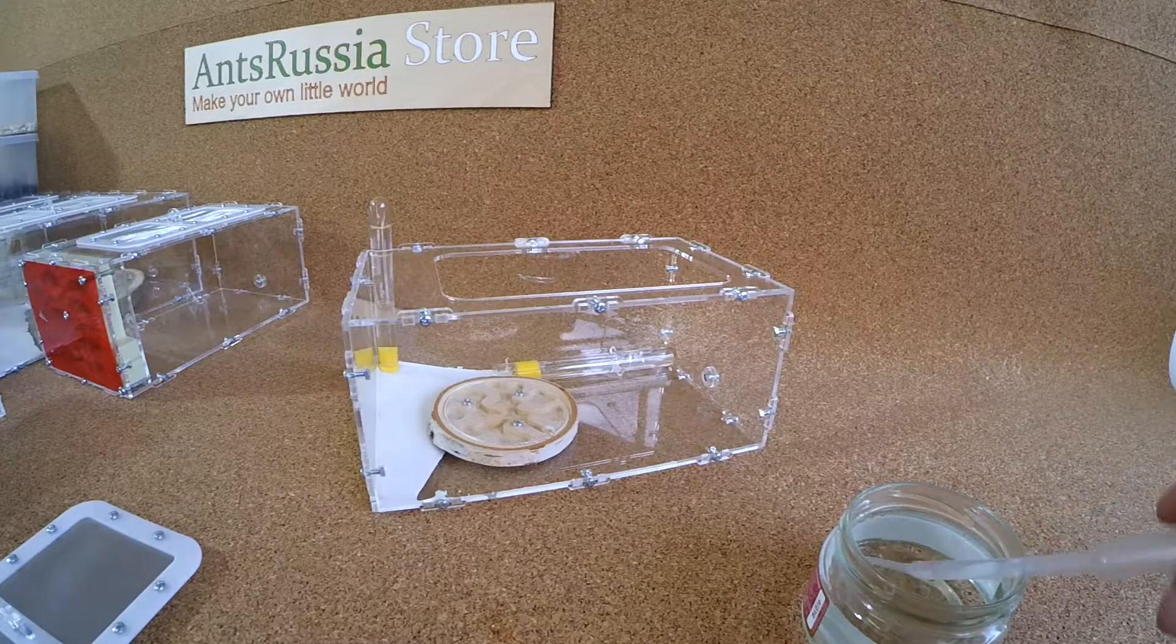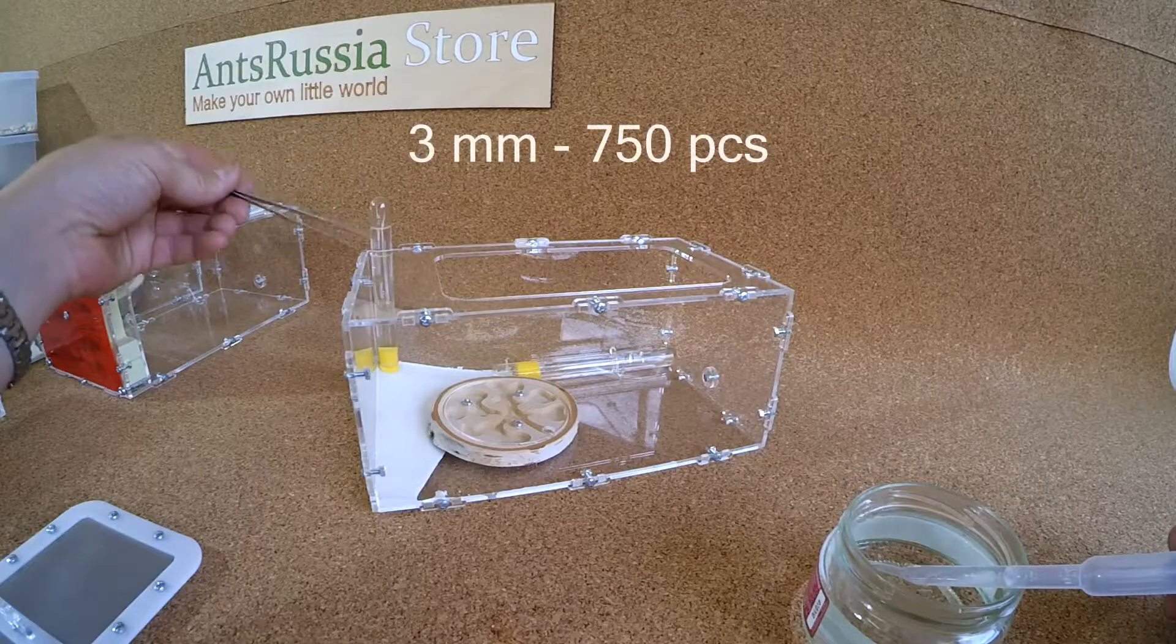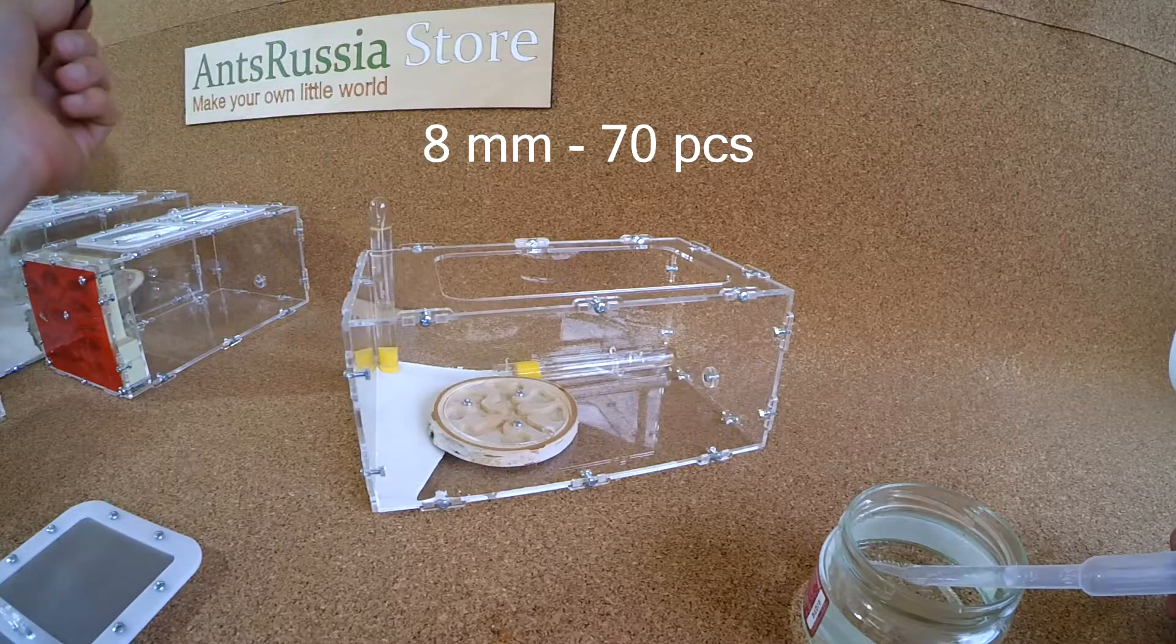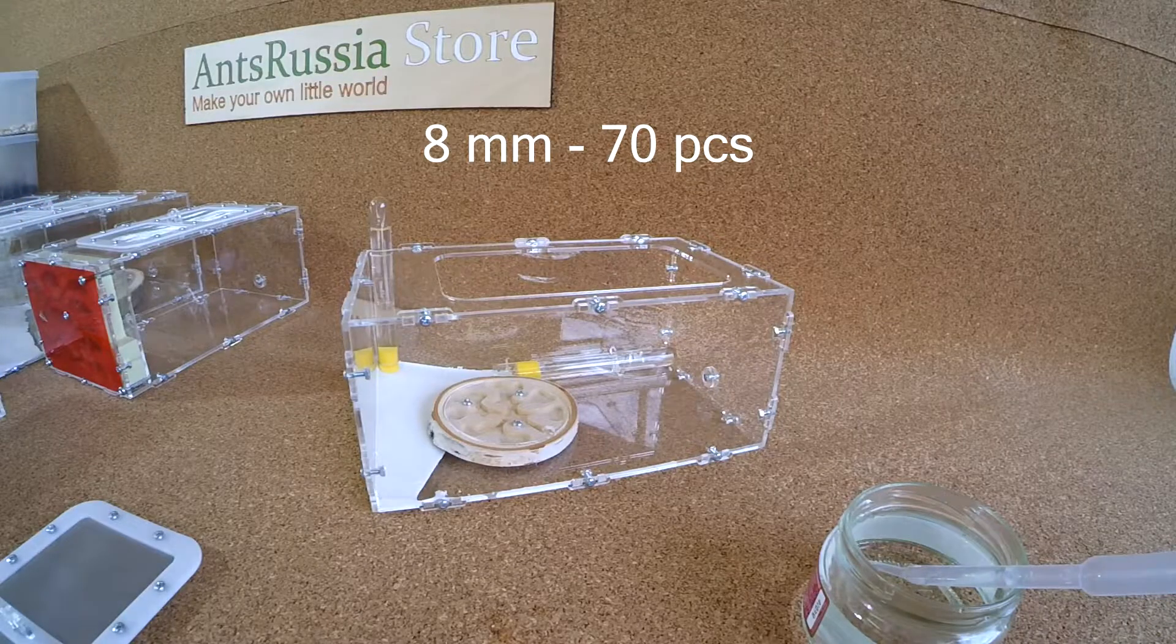Maximum number of a colony with the average size 3 mm is about 750 pieces. At average size 8 mm about 70 pieces.